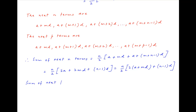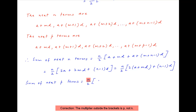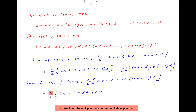Similarly, the sum of the next p terms is equal to p upon 2 times in brackets the sum of the first term and last term of the series — that is a plus md plus a plus m plus p minus 1 times d — which equals p upon 2 times in brackets 2 times a plus md plus p minus 1 times d.